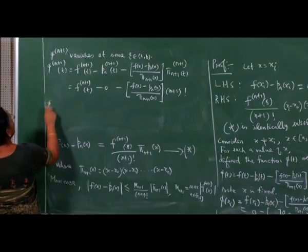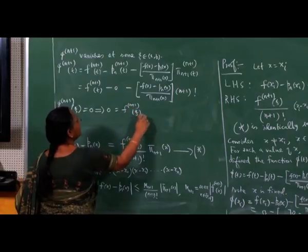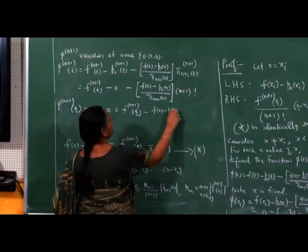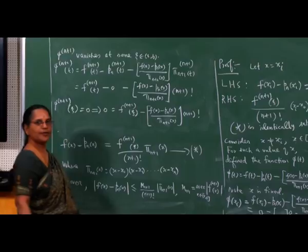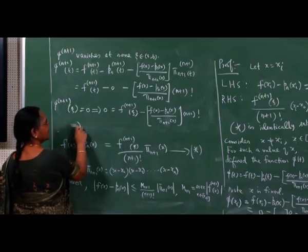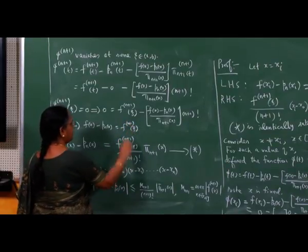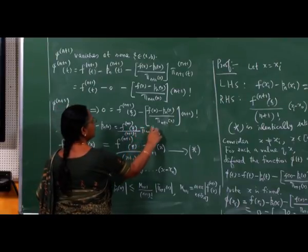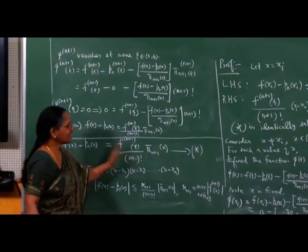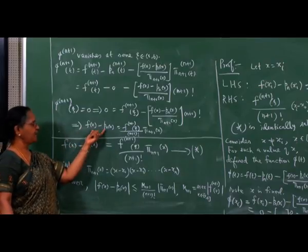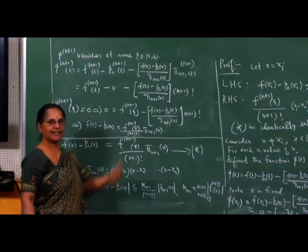So the (n+1)th derivative of φ at ψ is 0, which gives: (n+1)th derivative of f at ψ minus [f(x) - p_n(x)] / π_{n+1}(x) · (n+1)! = 0. Rewriting, we get f(x) - p_n(x) = f^{(n+1)}(ψ) / (n+1)! · π_{n+1}(x), which is the result (★). We have shown that the error in interpolation at any x in [a, b] different from ξ_i is given by this right-hand side.